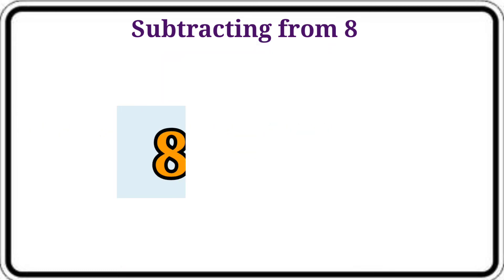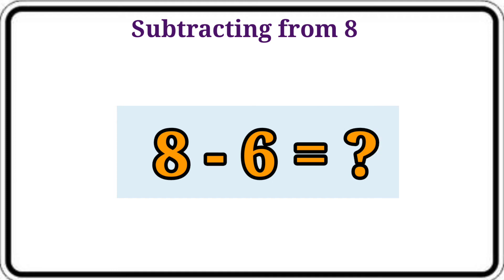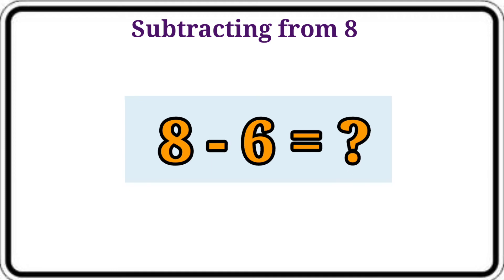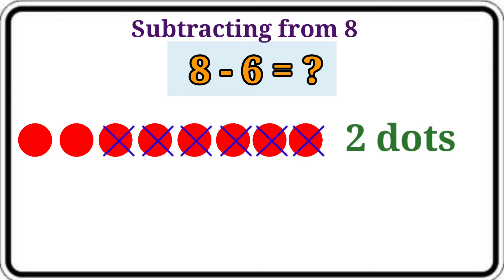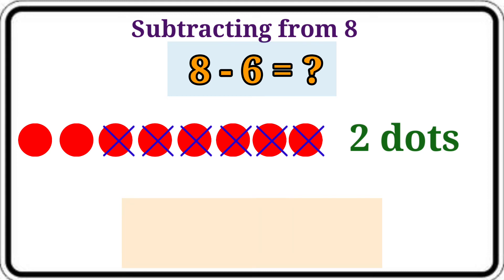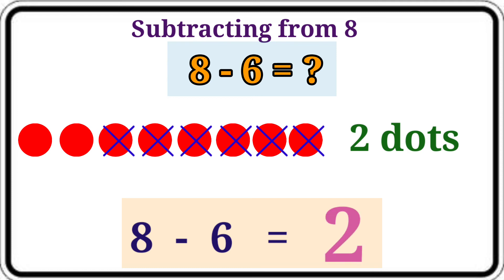Then 8 minus 6. Count the dots that are not crossed. Here 2 dots are not crossed. The answer is 2. Write them. 8 minus 6 is equal to 2.